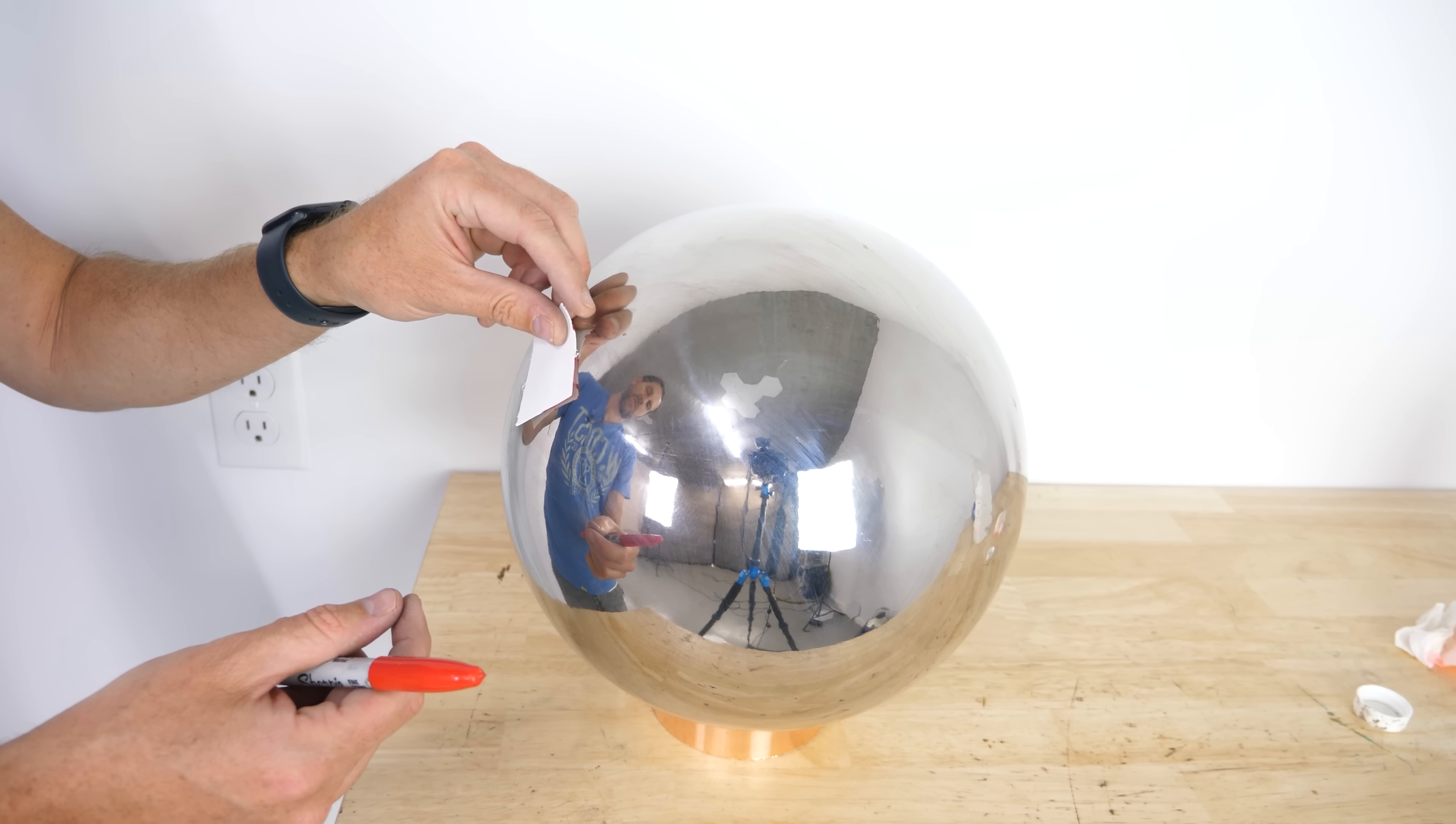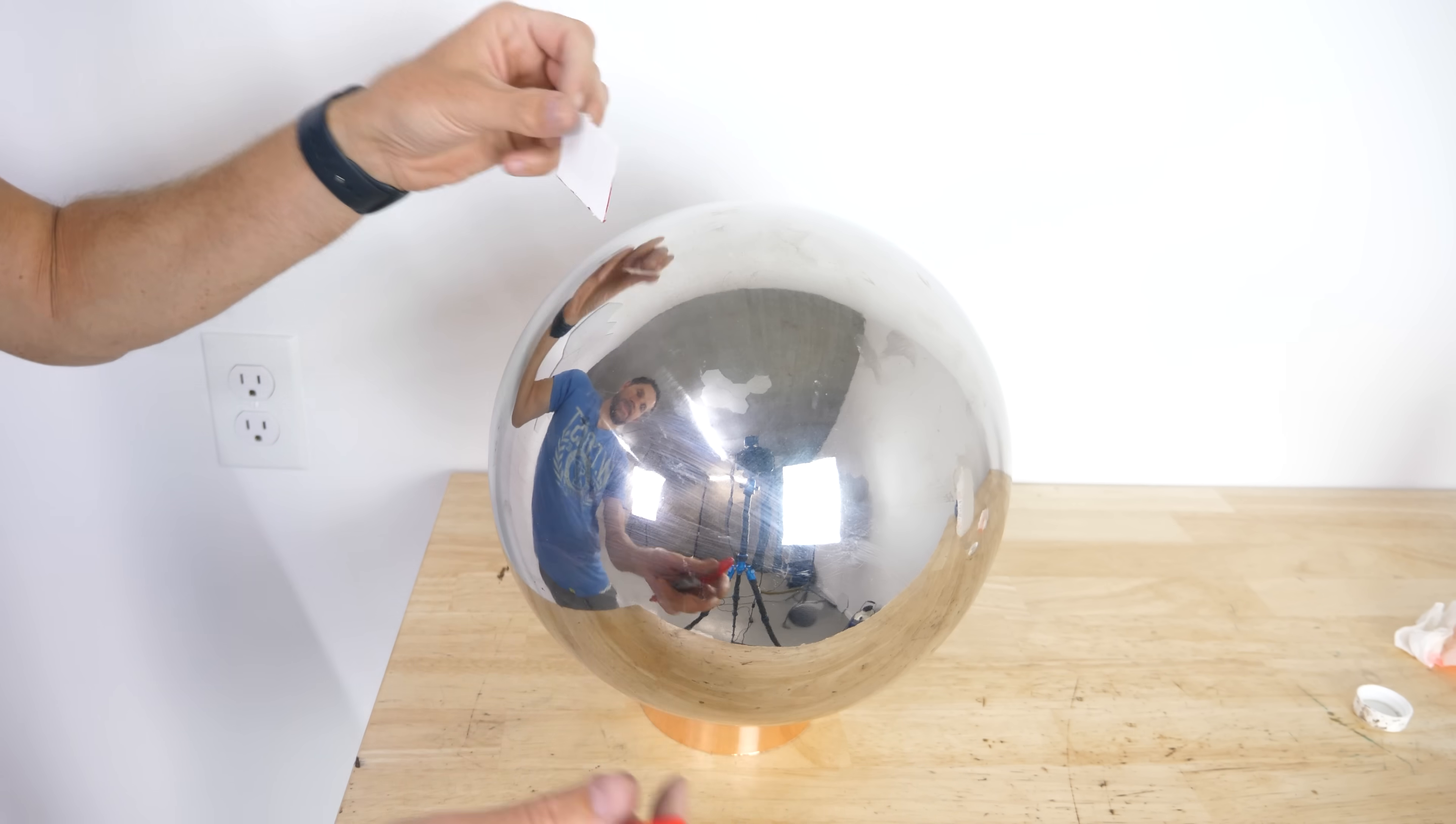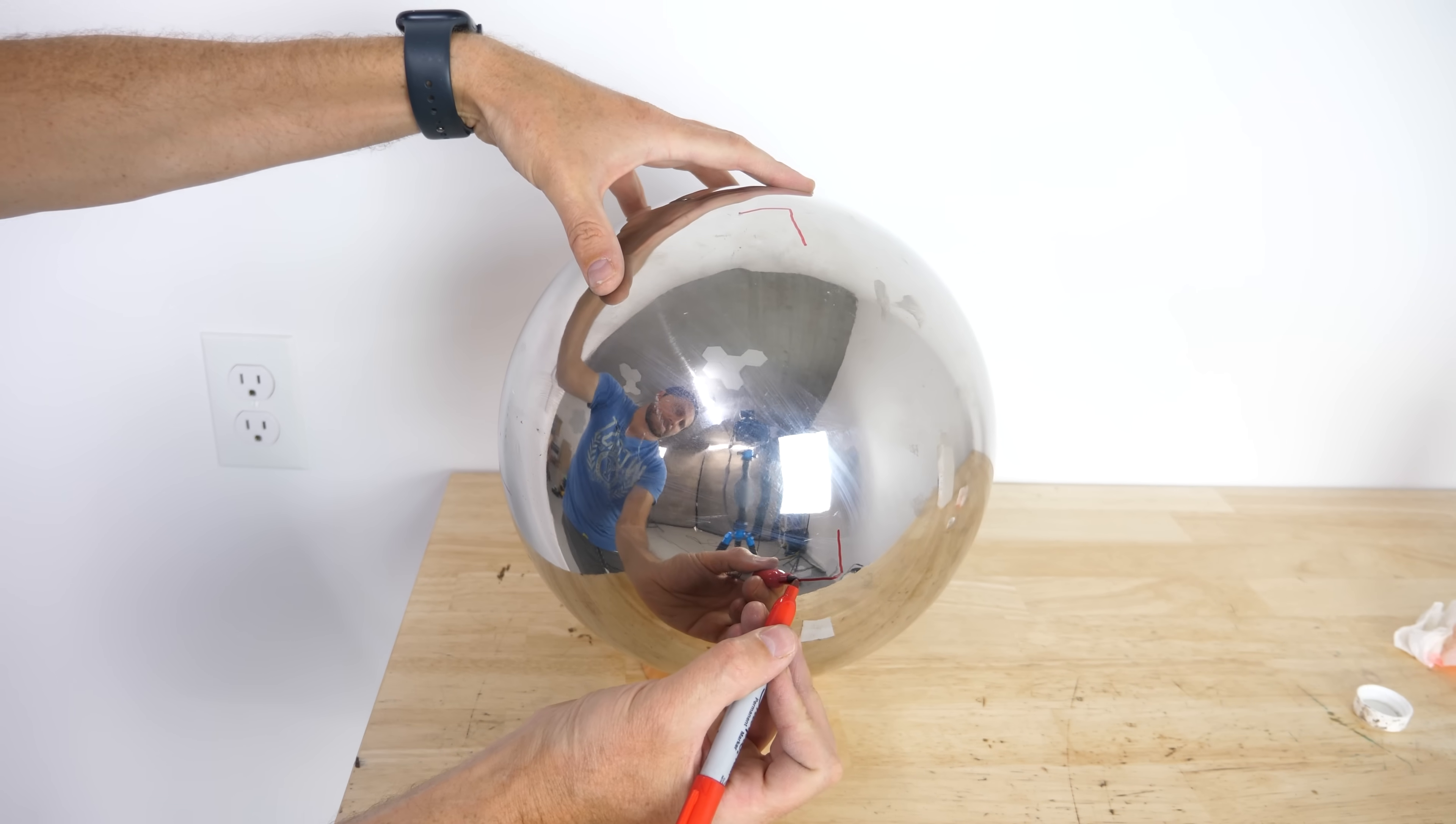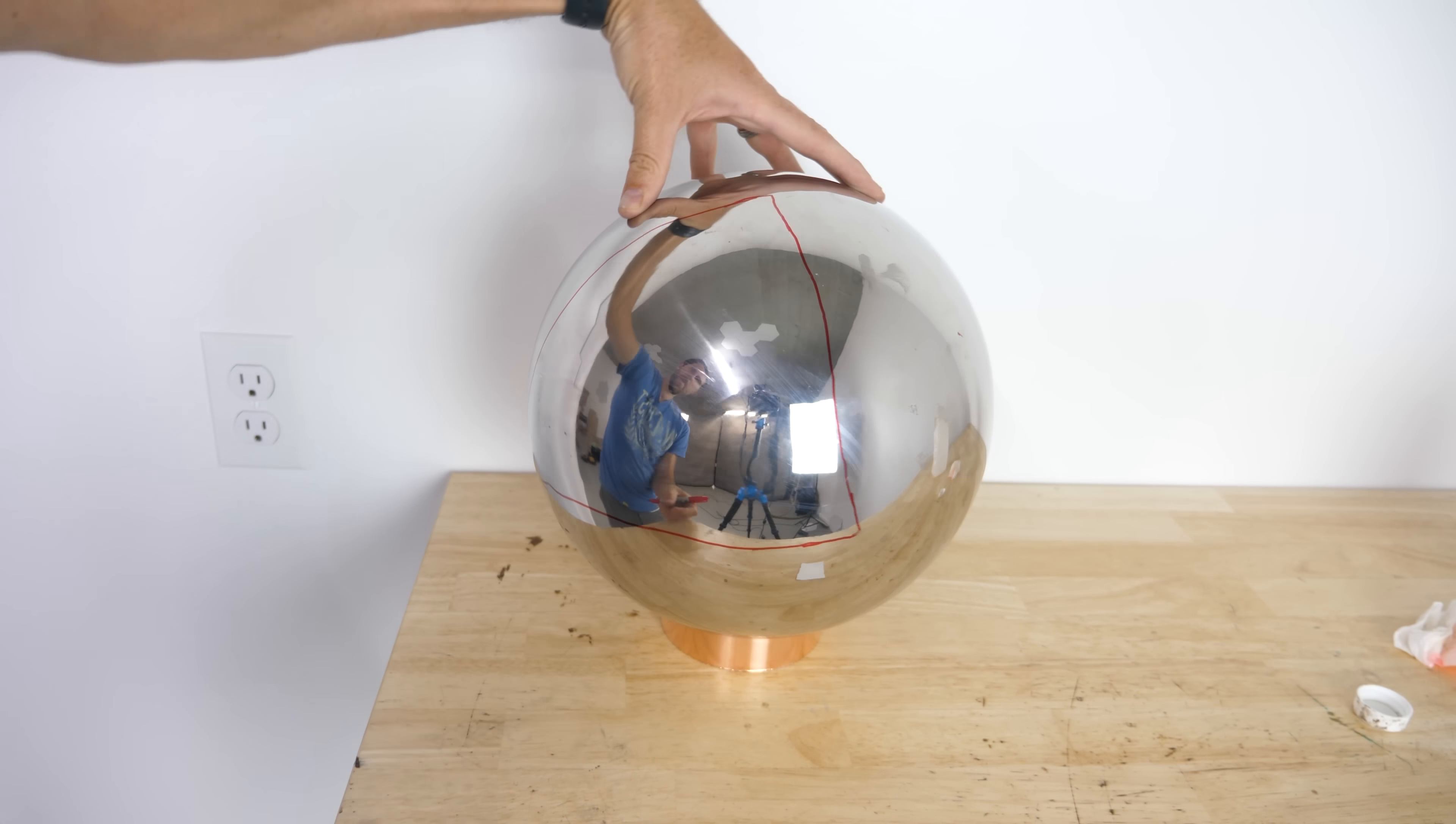But now we can take the surface of a sphere like this. It's also a 2D surface and it's also extrinsically curved because it's curving into a higher third dimension. But notice that if I draw a triangle, I don't get 180 degrees. In fact, I can make a triangle with three right angles.